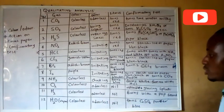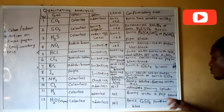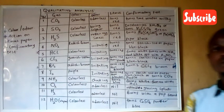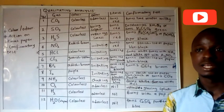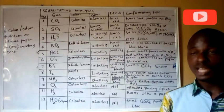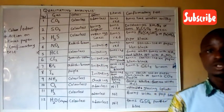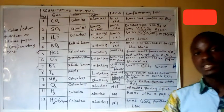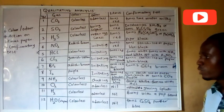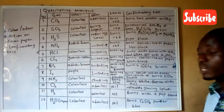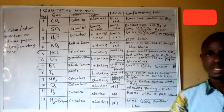Hydrogen is colorless and neutral to litmus paper. Its confirmatory test is the pop sound it produces when ignited. There is a video on this channel showing the production of hydrogen gas using aluminium foil and sodium hydroxide — the gas is lit and burns with that characteristic pop sound.